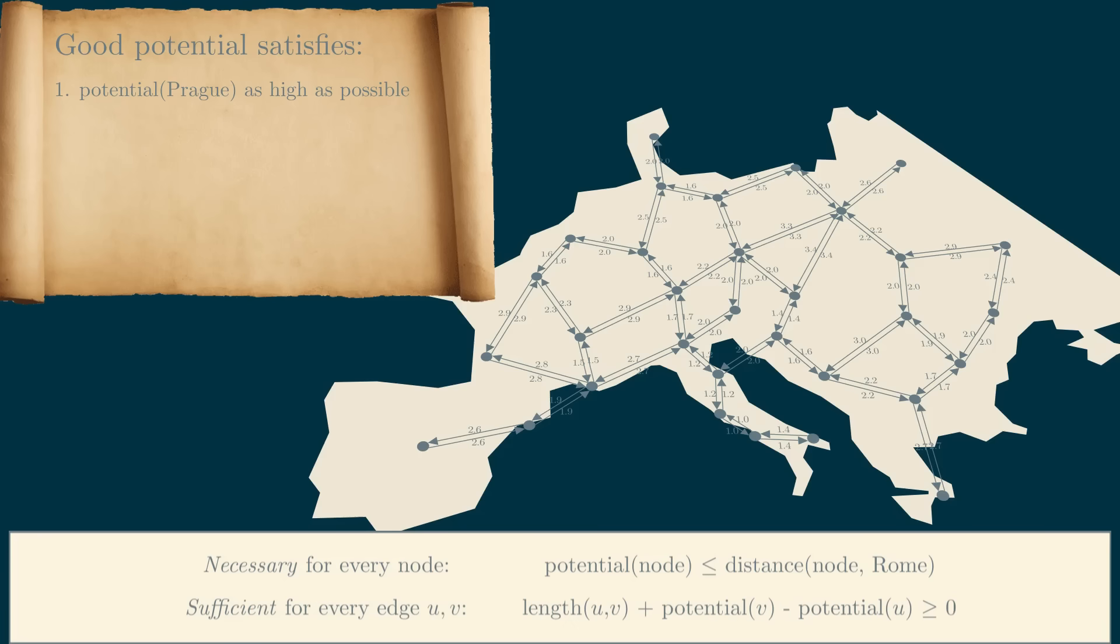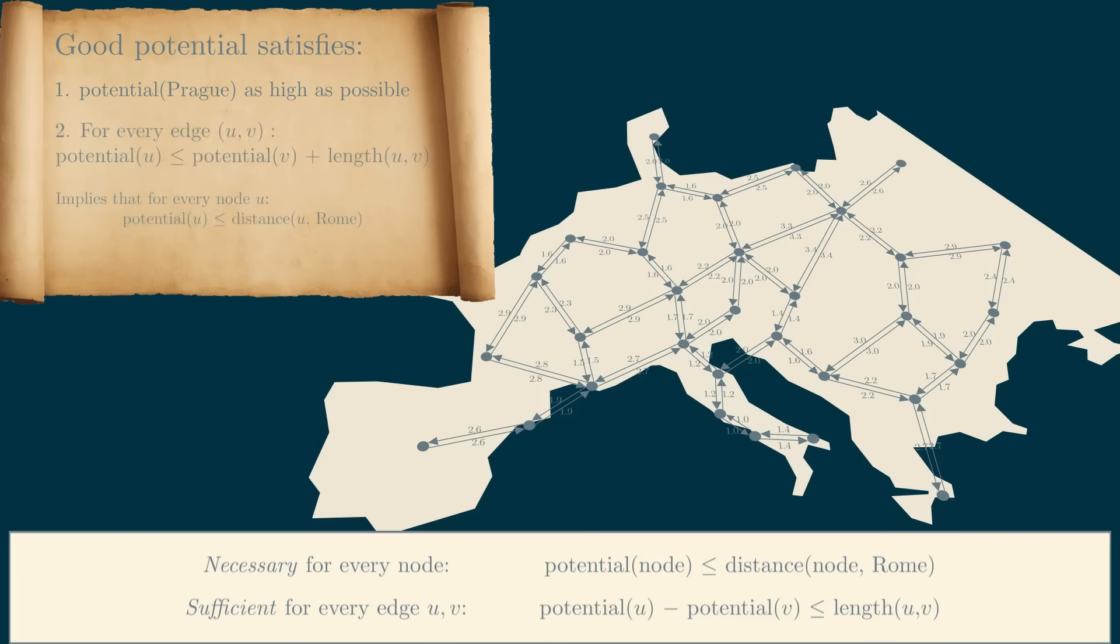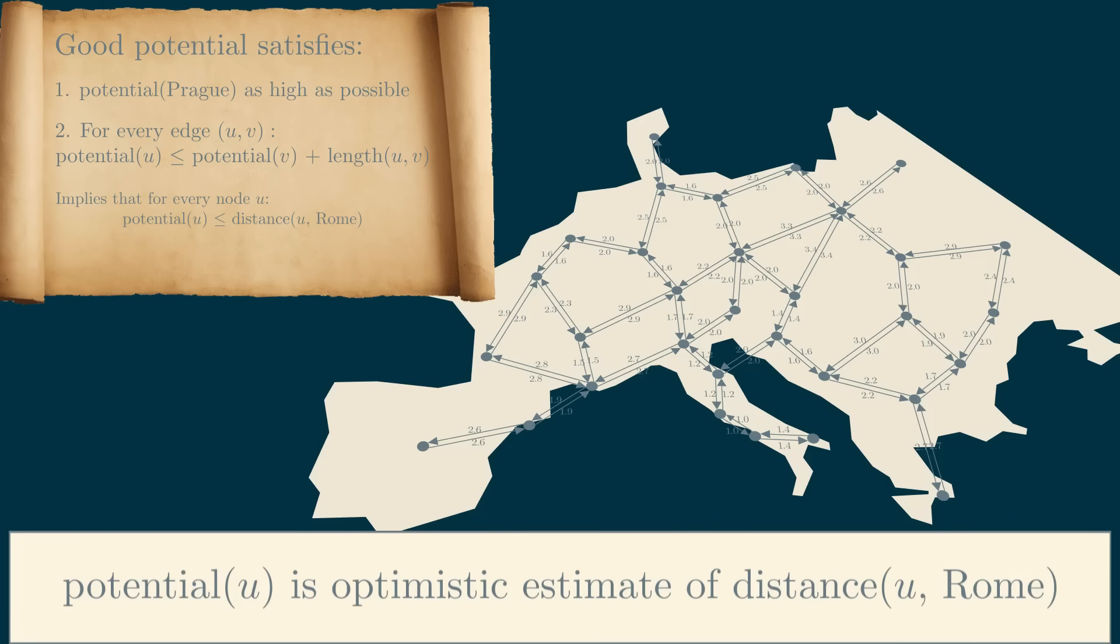So the sufficient condition that needs to be satisfied is simply that for every edge, its new length has to be non-negative. If we plug in our formula for the new length of an edge, and rearrange, we get an inequality that says that along any given edge, the potentials cannot increase by more than the edge's length. Of course, if the sufficient condition is satisfied, so is the necessary one. However, let me add both of them to the list, simply because the necessary condition is easier to understand. It simply says that the potential has to be an optimistic estimate of the actual distance to Rome. Reasonable estimates, fortunately, also usually satisfy the sufficient condition.